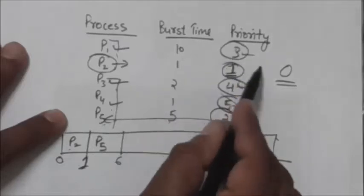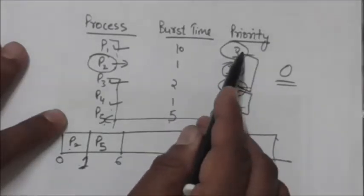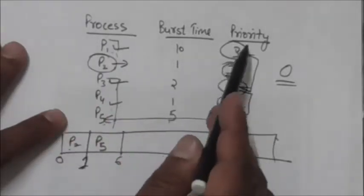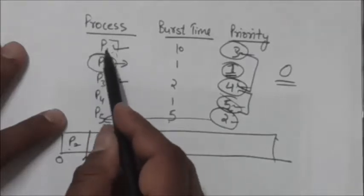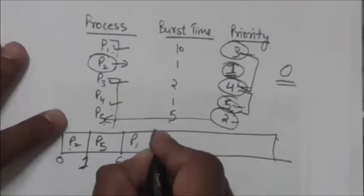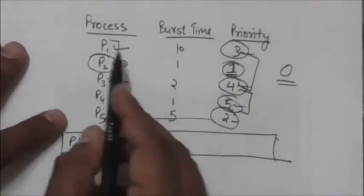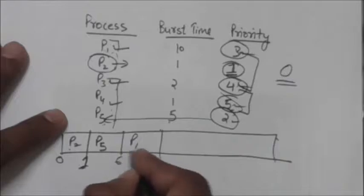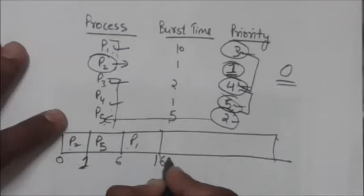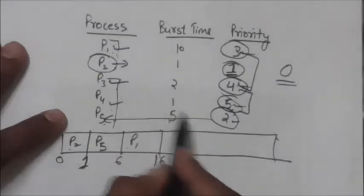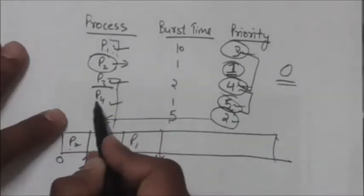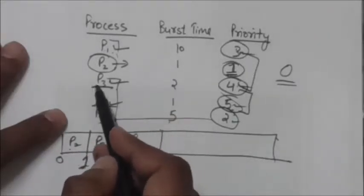Among the remaining processes, the lowest priority number is 3, which indicates the priority of process P1. So at time 6 the CPU is allocated to P1. The burst time of P1 is 10, so after 10 units of time, at time 16, P1 will release the CPU.